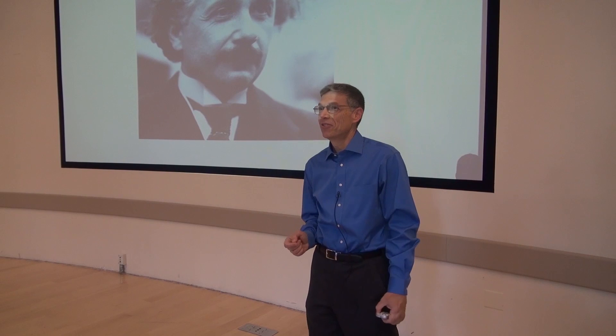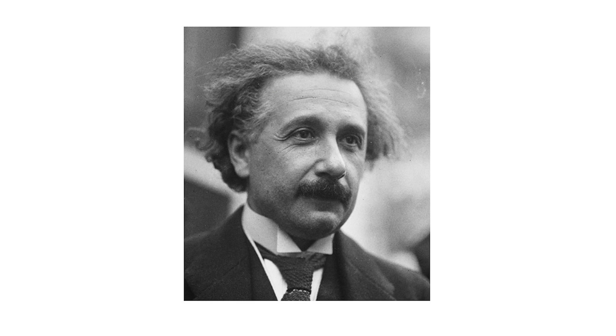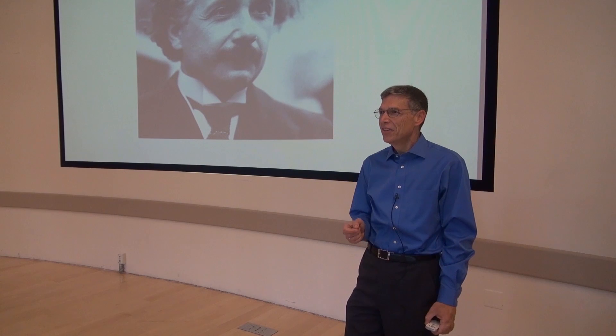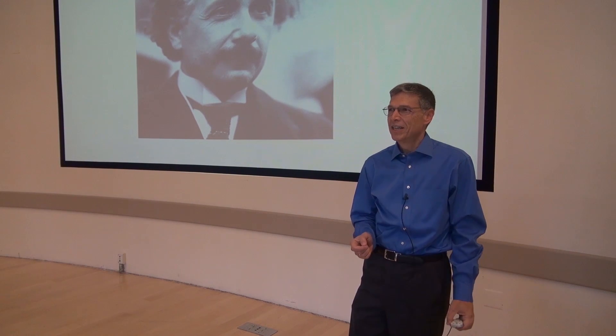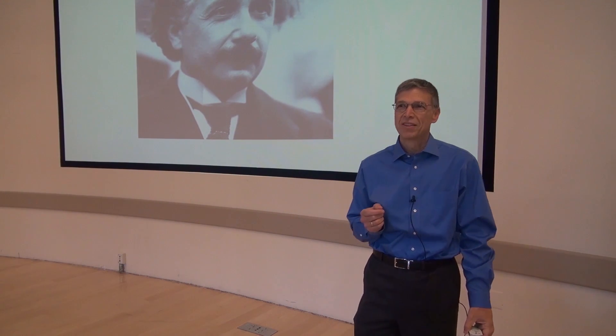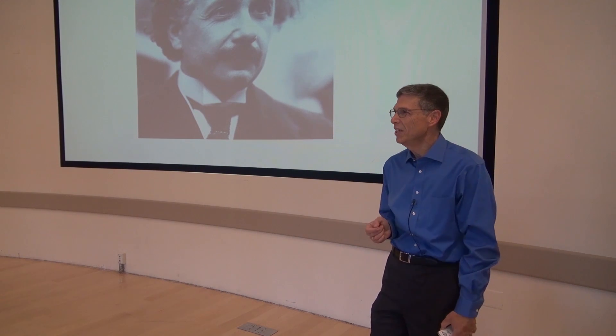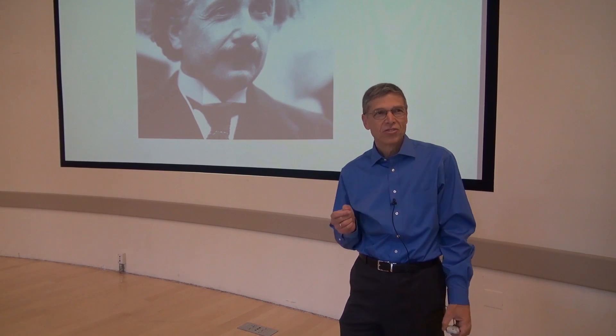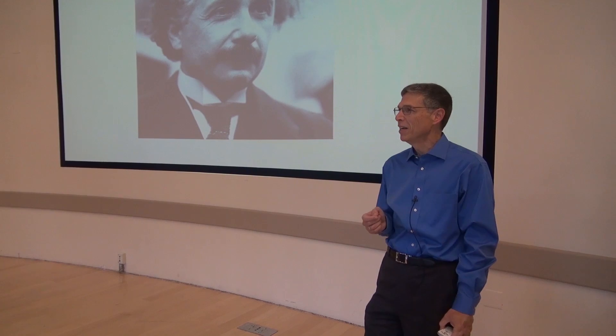Next year marks the 100th anniversary of Einstein's discovery of his general theory of relativity. This is an amazing theory of gravity. It predicts that light is bent when it passes by a massive object like the sun. This was first seen in 1919 and this early confirmation of his theory made Einstein famous.